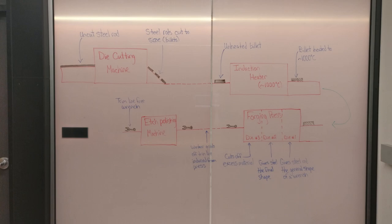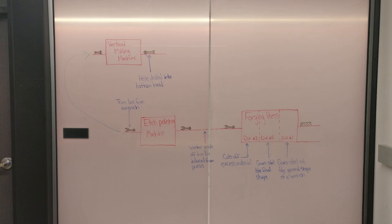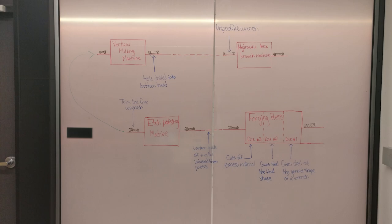A vertical milling machine drills the rough shape of a profile in one head of the wrench before being put through a hydraulic hex broaching machine, where the final profile is formed. Finally, a worker grinds the edges to make the finishing touches. And this is how our wrenches manufactured.